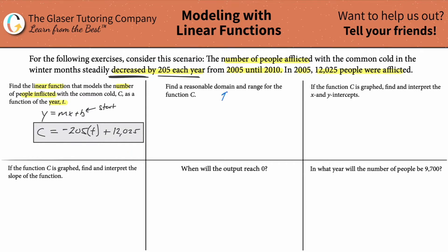Now it says find a reasonable domain and range. The domain is the list of possible x values, and in this problem we're talking about time values. It's telling us from 2005 until 2010. The time represents the number of years. Time can start at zero, meaning 2005 is t=0, 2006 would be t=1, 2007 t=2, 2008 t=3, 2009 t=4, and 2010 would be t=5. So the time can go all the way up to five years — there's a five-year period between these two.